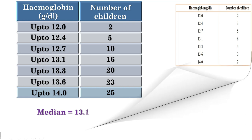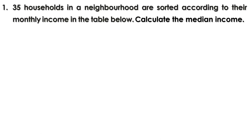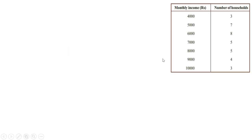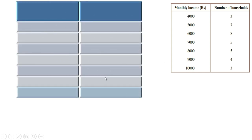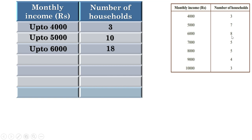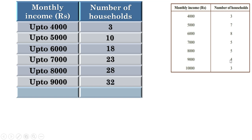Now let us do the first problem. 35 households in a neighborhood are sorted according to monthly income. Calculate the median income. Let us prepare a cumulative frequency table. Up to 4000, there are 3 households. Up to 5000, there are 3 plus 7, or 10 households. Up to 6000, there are 10 plus 8, or 18 households. Up to 7000, there are 23; up to 8000, there are 28; up to 9000, there are 32; and up to 10,000 there are 32 plus 3, or 35 households.